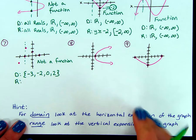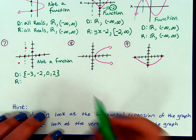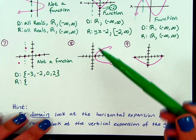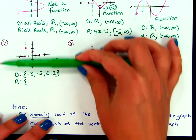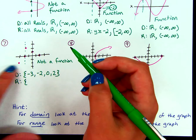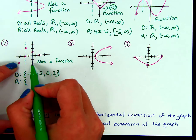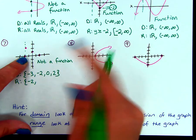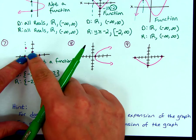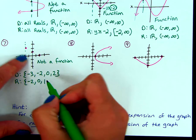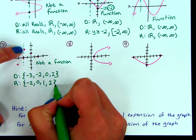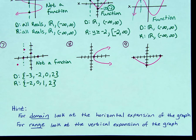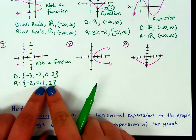For range, same idea. I'm going to look at my graph, working from the bottom all the way up. Our lowest dot is at negative 2. Our next two points have a y value of 0. Then this one has a y value of 1, and our last one has a y value of 2. So there's our domain and range. Remember, continuous graphs use inequalities or interval notation; discrete graphs have a list of numbers.